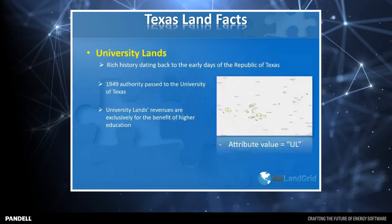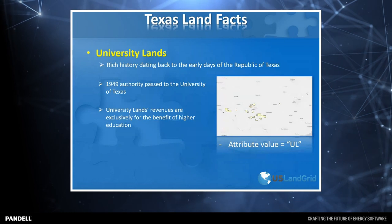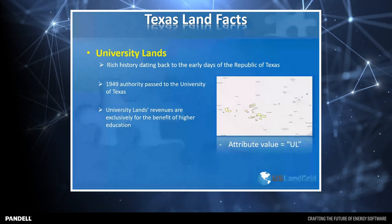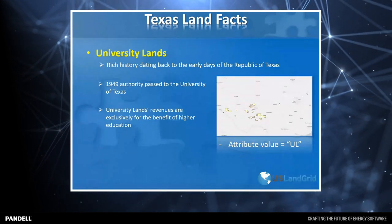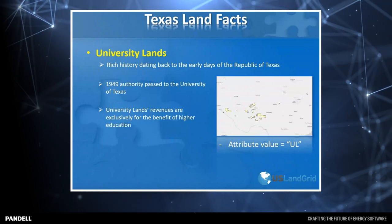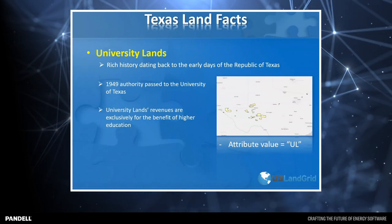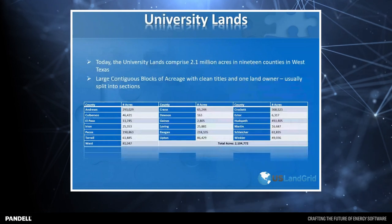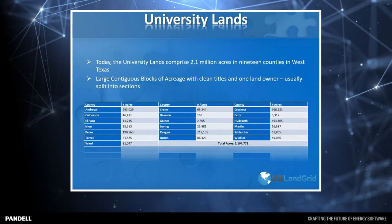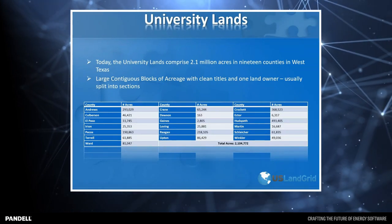Let's talk about university lands — an area many people don't know much about. University lands date back essentially to the creation of the General Land Office in 1837. In 1949, authority of university lands passed from the state to the University of Texas. Even today, university land revenues are exclusively for the benefit of Texas universities. We have 2.1 million acres of university lands in 19 counties in West Texas — large, continuous blocks of acreage with clean titles and one landowner, making them advantageous for commercial interest.